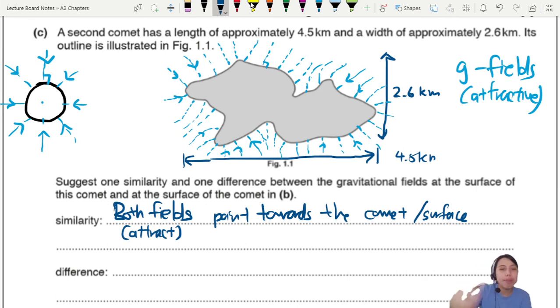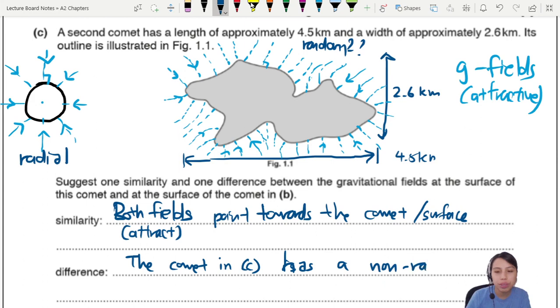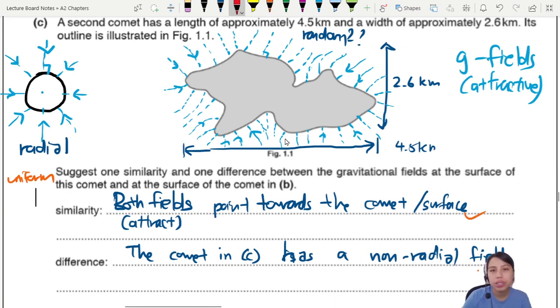The difference: the main difference is the pattern. If you look on the left side, this nice pattern is called a radial field. The one on the right is random. The comet in C has a non-radial field. Usually in electric field and gravitational field, there's only a few types: radial, uniform field, and non-radial or non-uniform - all over the place like this one. This is two marks - one for similarity, one for difference.